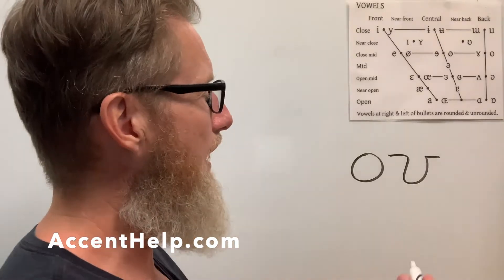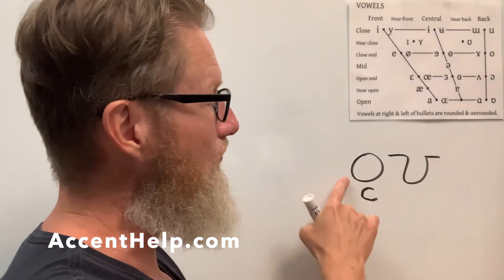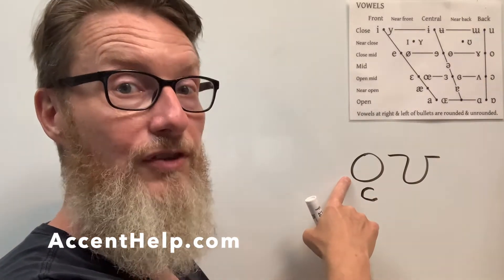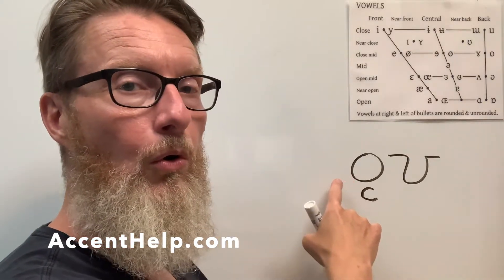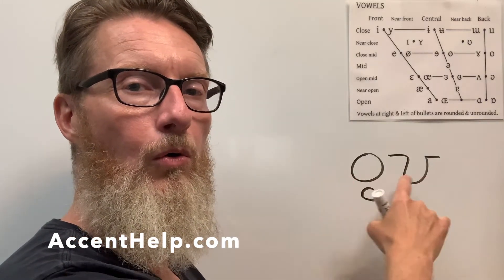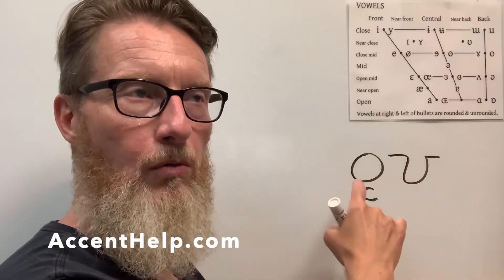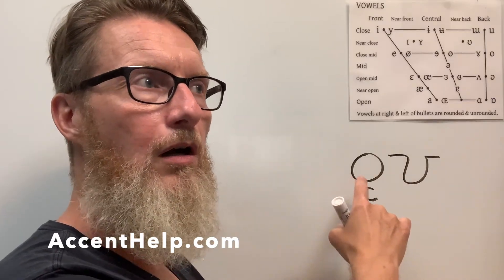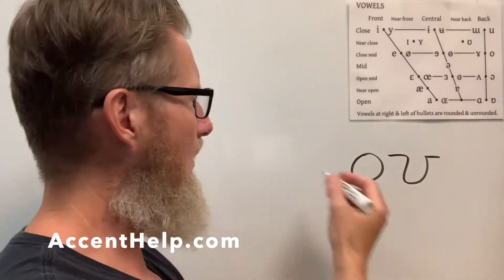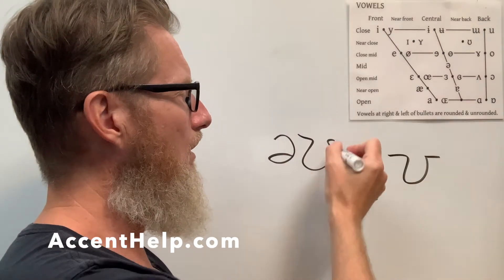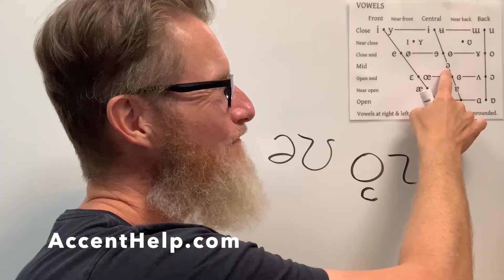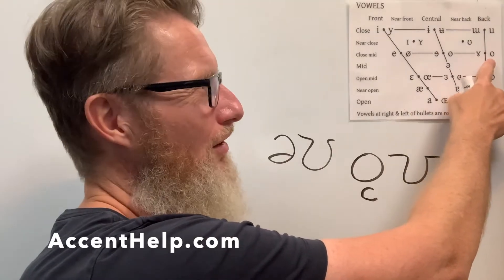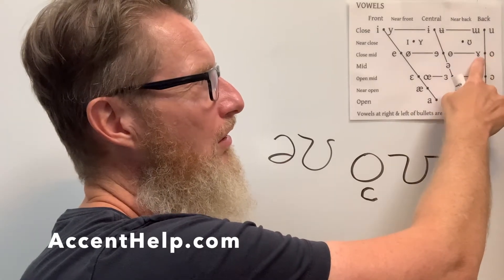The big thing that I hear happening is a really strong reduction in the rounding of this symbol. Most Americans go more toward an O where it's almost like it's a reduced O. Now, that's too much in the middle — it's something much closer to the O.